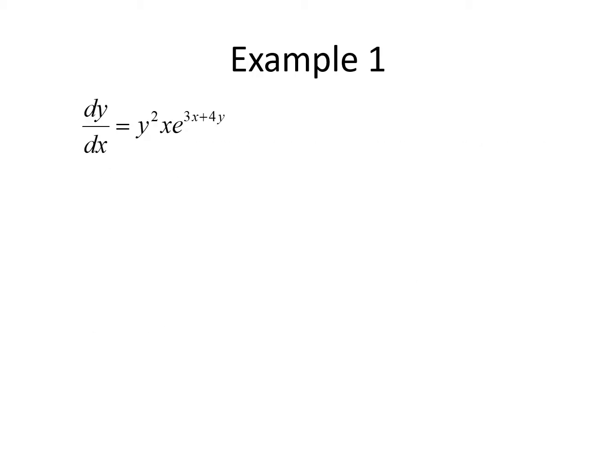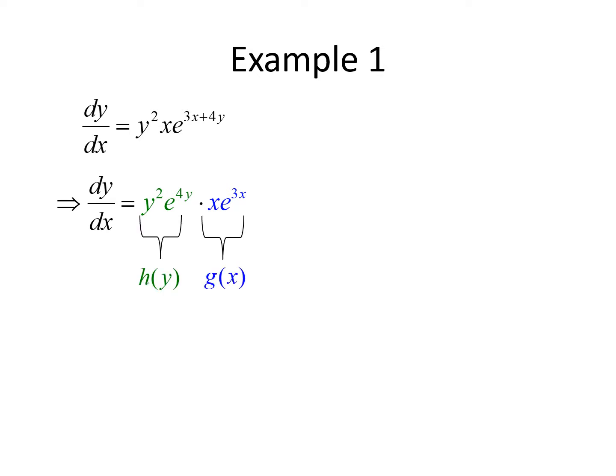For example, if we have dy/dx equals y squared times x times e to the 3x plus 4y, we can manipulate this by rewriting that exponential function. Remember, when you have a sum in the exponent, you can rewrite that as a product. So this could be y squared times e to the 4y times x times e to the 3x. You can see y squared e to the 4y is a function of y and x times e to the 3x is a function of x, and since we have a product, this is a separable equation.